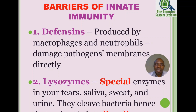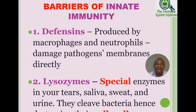The second chemical barrier is lysozymes. Lysozymes are special enzymes found in certain body fluids including tears, saliva, sweat, and urine. They work by cleaving and destroying the cell walls of microorganisms, making them a very important class of antimicrobial enzymes.